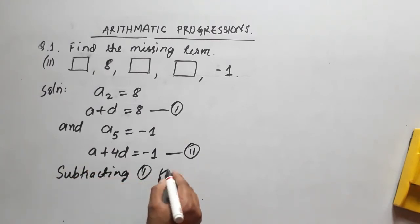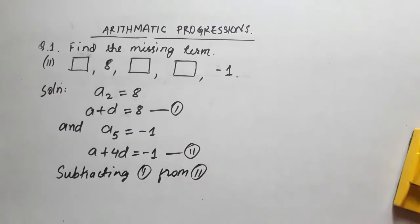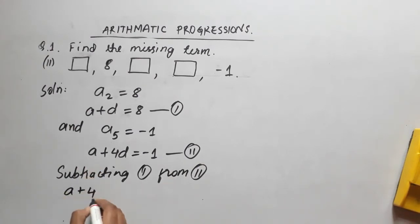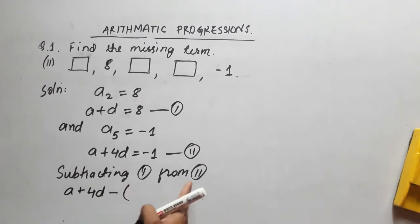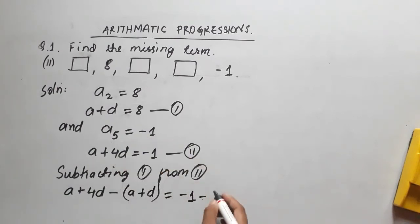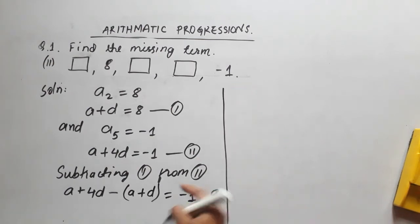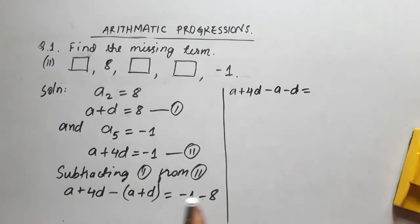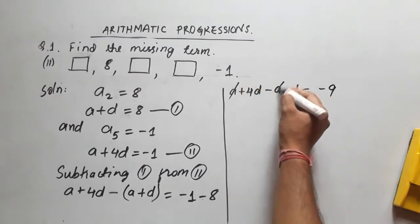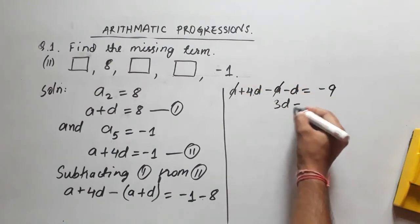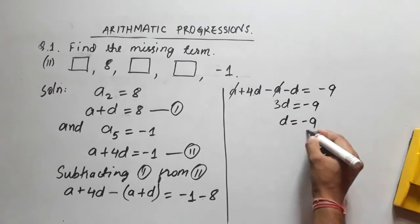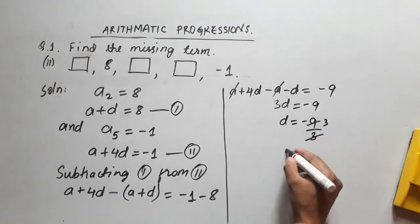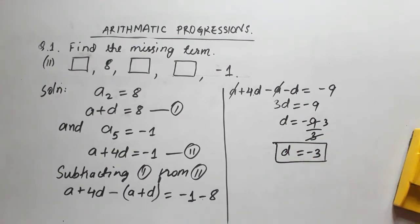To solve, we subtract equation 1 from equation 2. The left-hand side gives (a plus 4d) minus (a plus d) equals minus 1 minus 8. So a plus 4d minus a minus d equals minus 9, which gives 3d equals minus 9, therefore d equals minus 3.